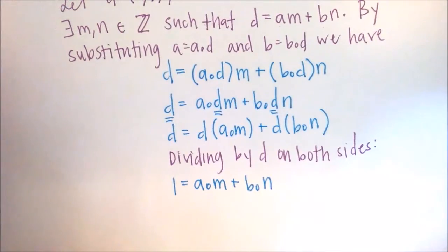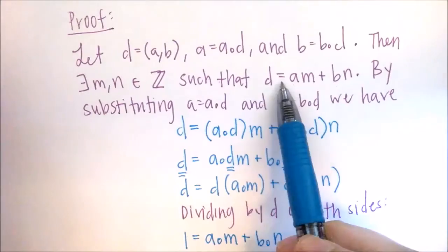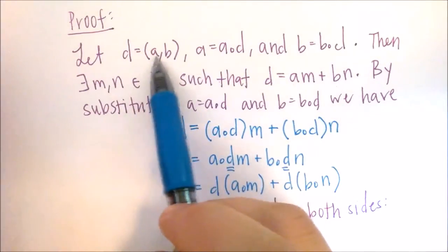And this is perfect because remember we said if we have a linear combination of two variables is equal to something, it's the same thing as saying that something is the GCD.